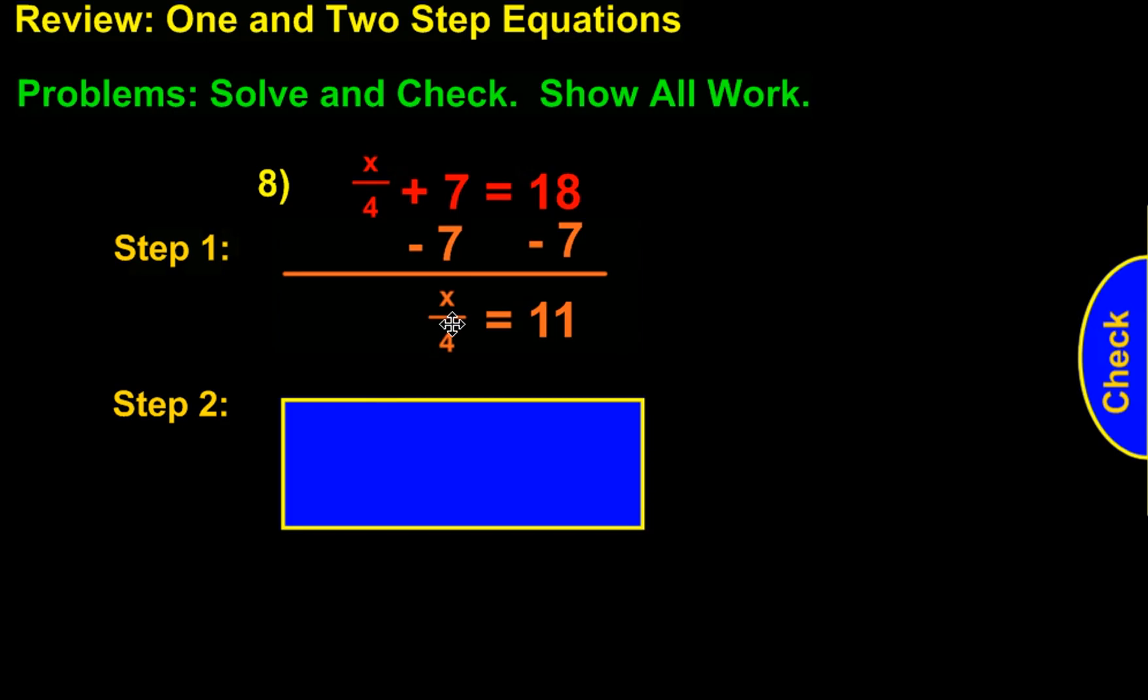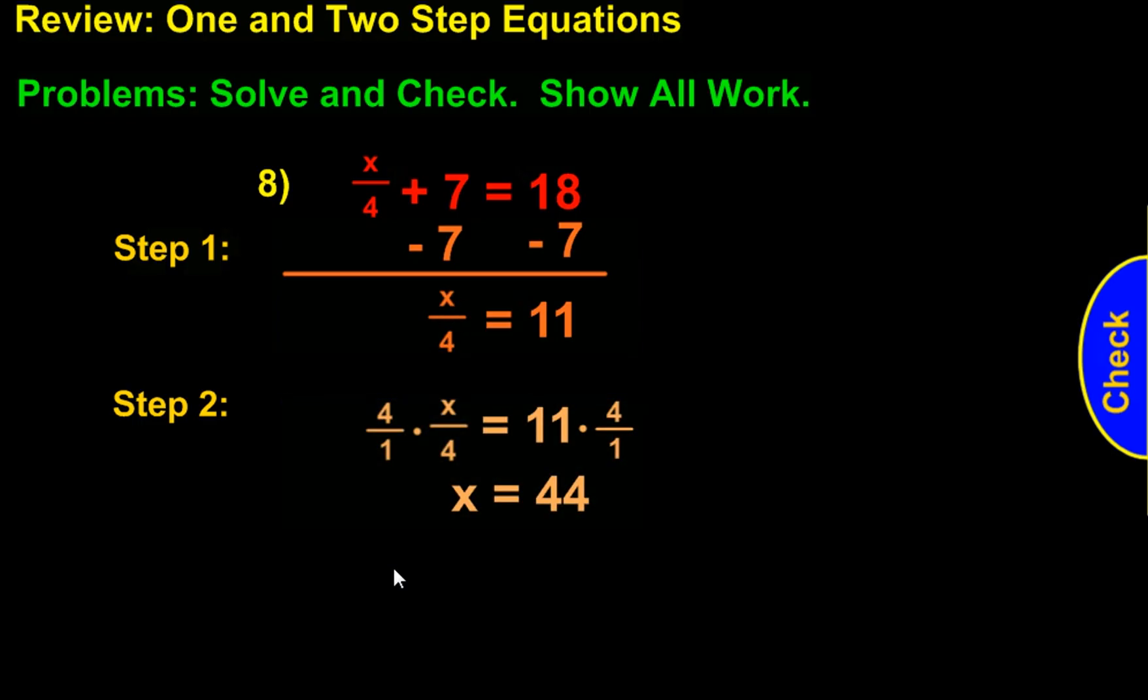That brings us to step 2, because we still have a 4 that we are dividing by. To get rid of that, we need to multiply by 4. Since it's set up as a fraction, we set our 4 up as a fraction: 4 over 1 and x over 4. As cross products, the 4s cancel out. 1 times x leaves you with x. We multiply the other side by 4 as well, which is 4 times 11, giving us 44.